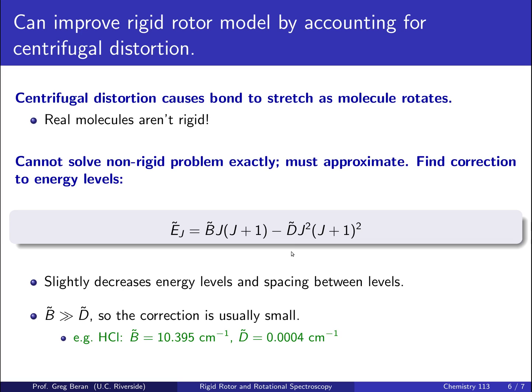Now, D is typically much smaller than B, several orders of magnitude. So, for example, in HCl, B is 10.4 wavenumbers roughly, while D is only 0.0004 wavenumbers. So, this correction, this centrifugal distortion correction, tends to be pretty small. It doesn't have a major effect, but if you're trying to do high-precision work in solving for bond length or geometry, you might want to consider these factors.